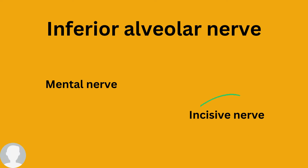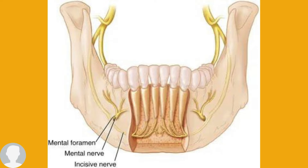As we said previously, the inferior alveolar nerve has two terminal branches, which are the mental nerve and the incisive nerve. Today our main focus will be on the incisive nerve. We have the inferior alveolar nerve with two terminal branches: the mental nerve and the incisive nerve. The mental nerve exits from the mental foramen. The incisive nerve continues to supply the anterior teeth — the incisors — that's why it's called the incisive nerve.